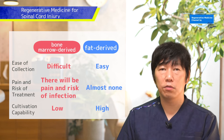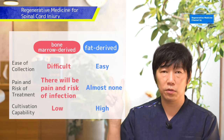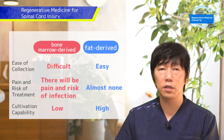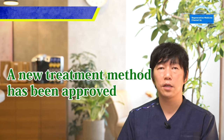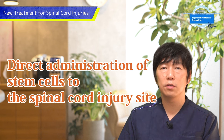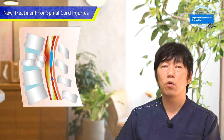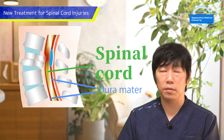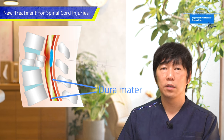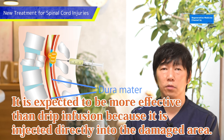In Japan, stem cell infusions are divided into two types: fat-derived and bone marrow-derived stem cells. A new treatment method for spinal cord injury regeneration has also been approved, which involves delivering stem cells directly to the damaged area of the spinal cord. The spinal cord is located within the dura mater, and this method delivers fat-derived stem cells directly into the dura mater, which is expected to be more effective than intravenous delivery.